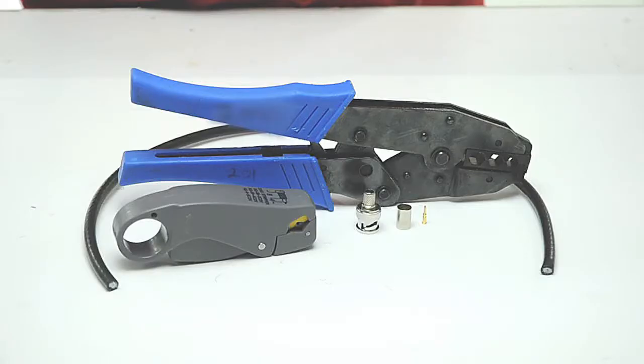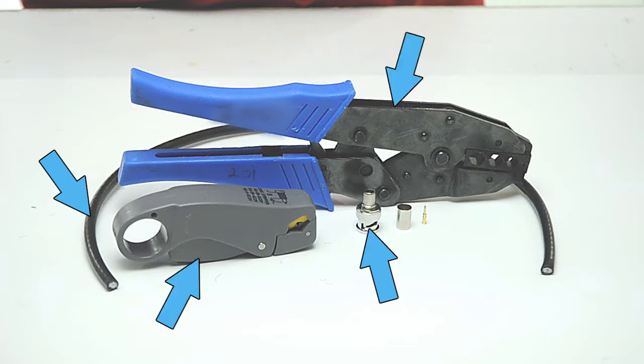For today's project we're going to need RG59 and RG62 plenum cable, BNC male crimp connector, coax stripper, and crimp tool.